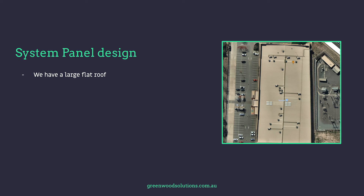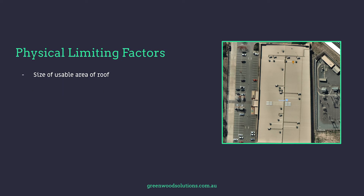In this scenario we have a large flat roof with lots of options — east-west versus north. There are always physical limiting factors: the size of the usable area of the roof, the orientation of the roof, the pitch of the roof, and the proximity of existing service structures like HVAC.